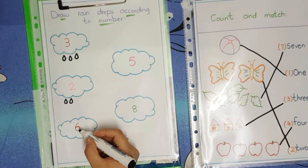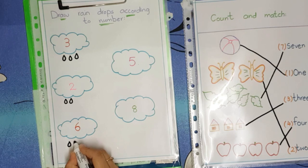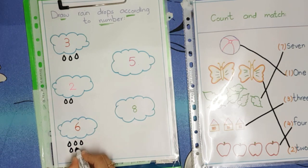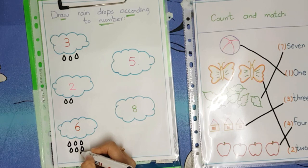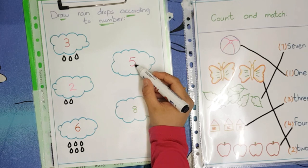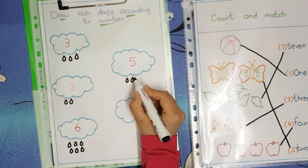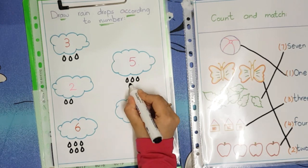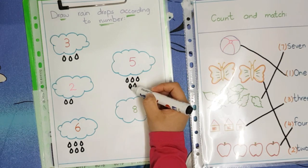We will draw six raindrops: one, two, three, four, five, six — six raindrops for number six. Now we will move to the next cloud. We have number five. Ask the students to draw five raindrops: one, two, three, four, five — five raindrops for number five.